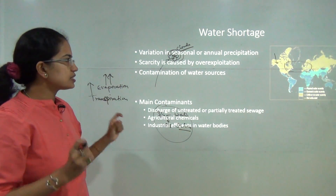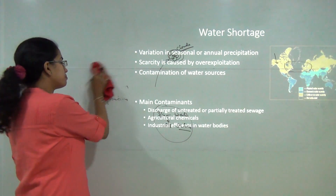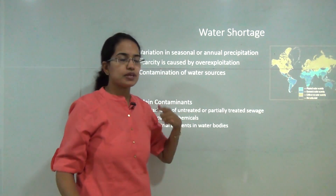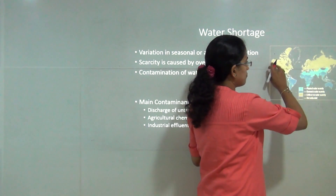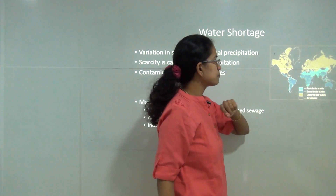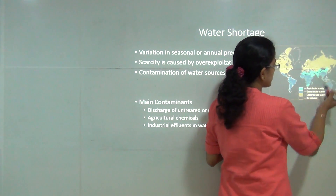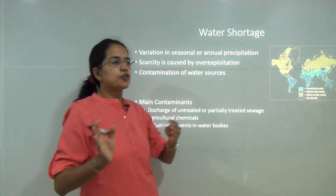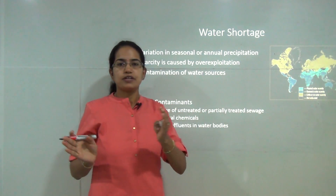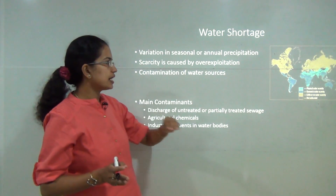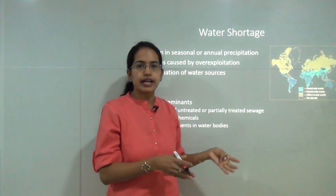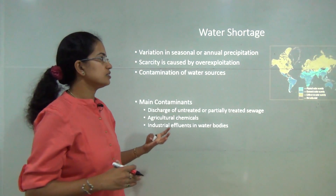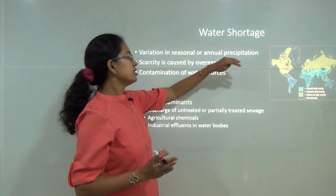Many nations face acute water shortage. For example, the town of Amreli in Gujarat has to buy water for daily use. Regions with very low water scarcity are marked differently from those with acute shortage. Water shortage varies with season and annual rainfall - India, being highly dependent on monsoon, experiences less shortage during good monsoon years and more during poor monsoon years.